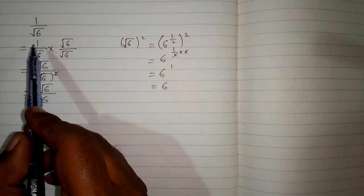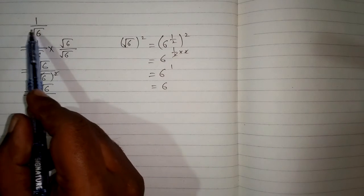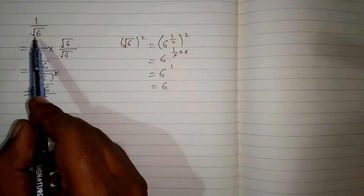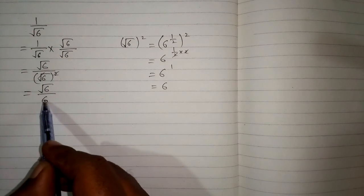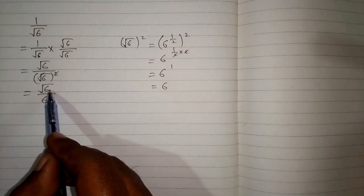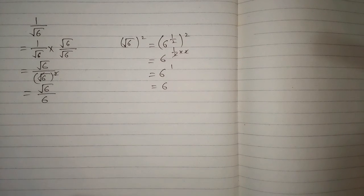So the answer of 1 upon square root of 6 is equal to square root of 6 upon 6.